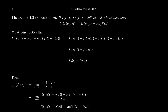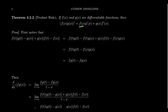The correct product rule is given by the following formula. If f and g are both differentiable functions, then the derivative of f times g will look like f times the derivative of g, plus g times the derivative of f. It's a sum of two products — in each product you have one original function and one derivative: f and g', and then g and f'.